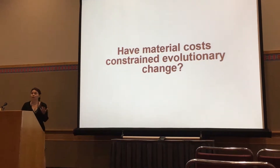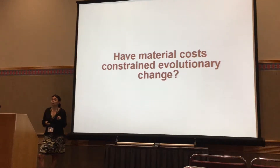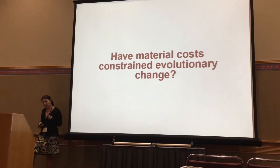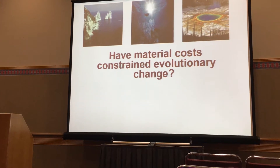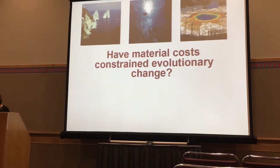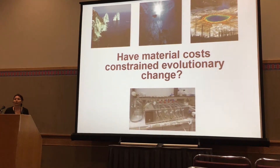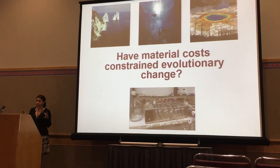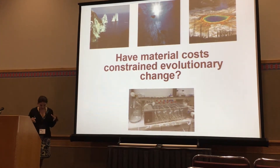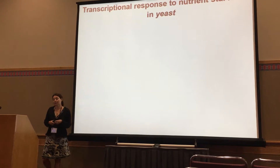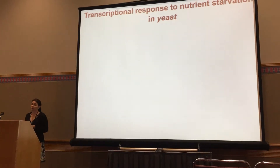I'm very passionate about whether material cost — how much nitrogen it costs to make your proteins and genes — might be one of the drivers of evolutionary change. In my group, we address this with different tools, ranging from metagenomics going directly to natural environments to ask about nitrogen allocation in proteomes and genomes, as well as lab experiments with strictly controlled nitrogen availability. Today, I'd like to talk about transcriptional response to nitrogen and nutrient starvation in yeast.